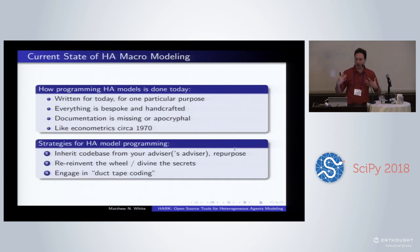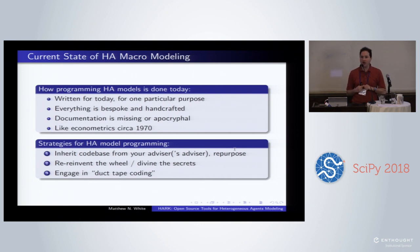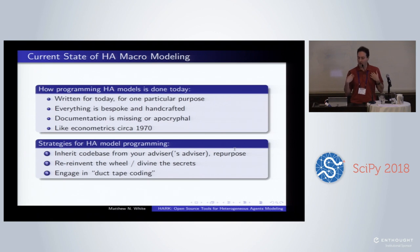So how is heterogeneous agents modeling programming done today? We economists have absolutely no sense of programming style. Every single thing that we do is done for today, to get through the day, for one particular purpose and for no one else. We have no thought of the future. At best, I wrote for future Matt — like two years in the future Matt — to remind myself what I did, but not for anybody else. Everything is bespoke and handcrafted. We reinvent the wheel constantly. Everybody redoes work that's been done a hundred times.